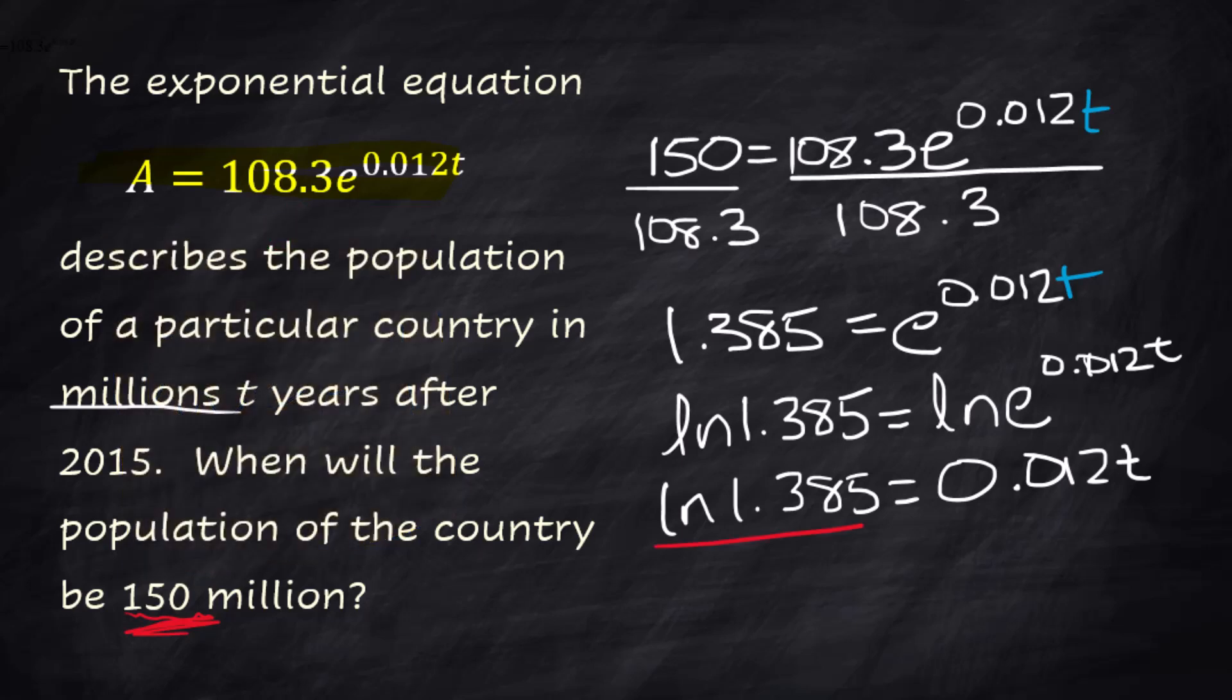Now to solve for t, one more step we're gonna divide by 0.012 on both sides. You grab your calculator and do it. 27.147. All right so it's approximately 27 years after the year 2015. So you have to add those together. 2015 plus approximately 27 years, the year 2042 when this population will be at 150 million.